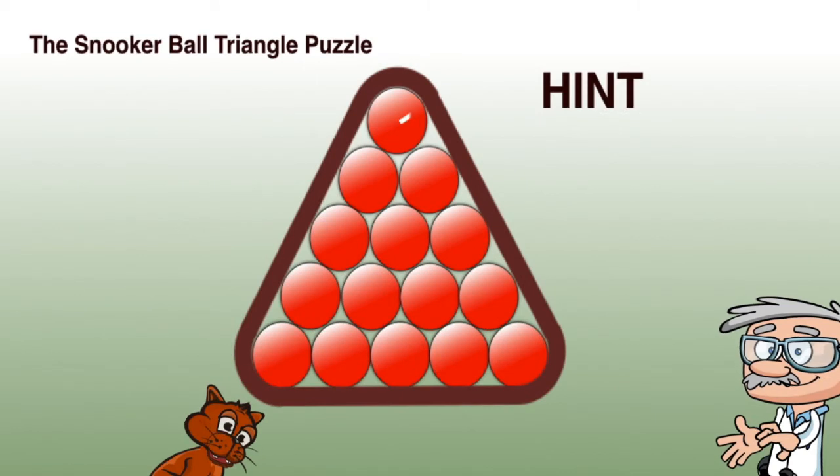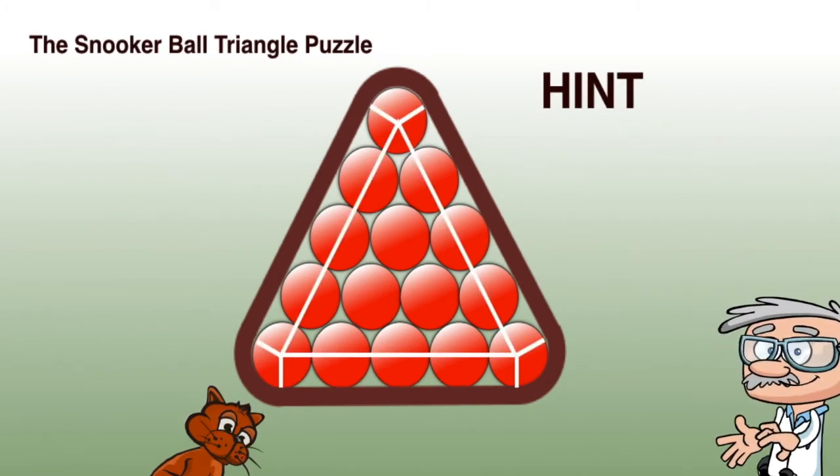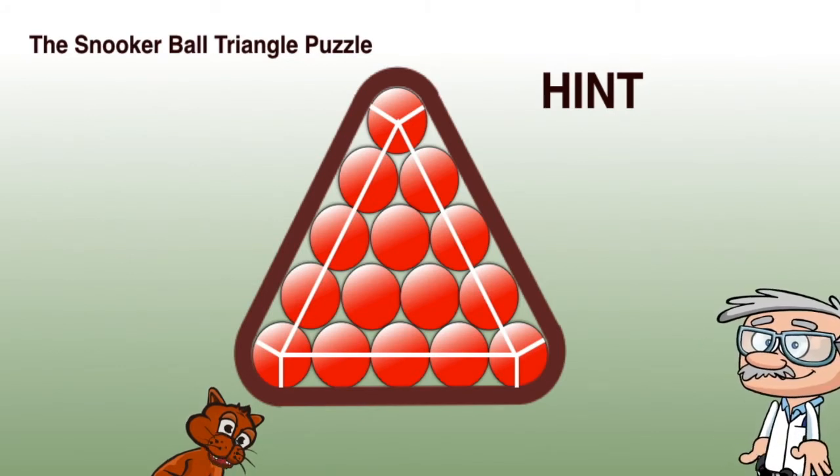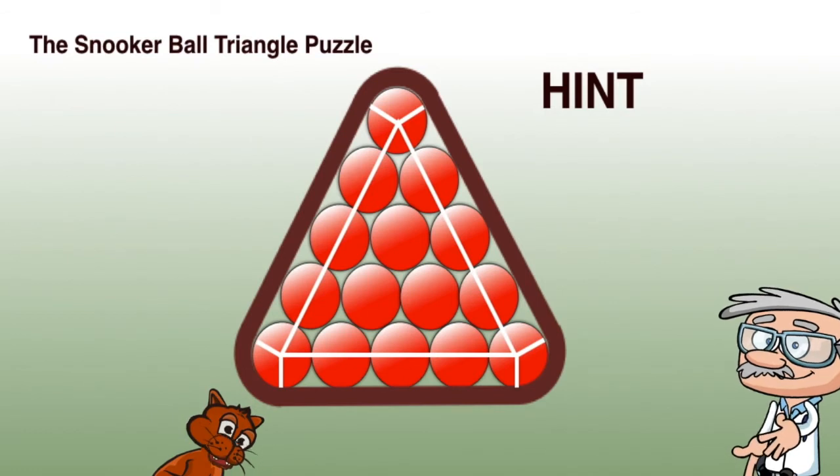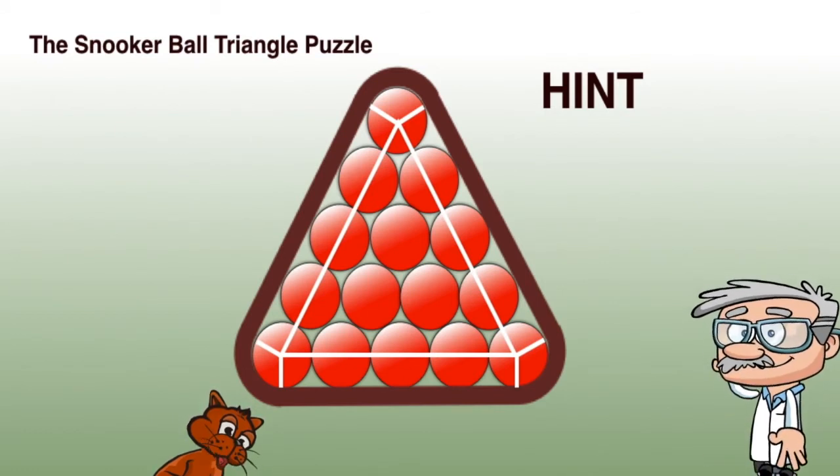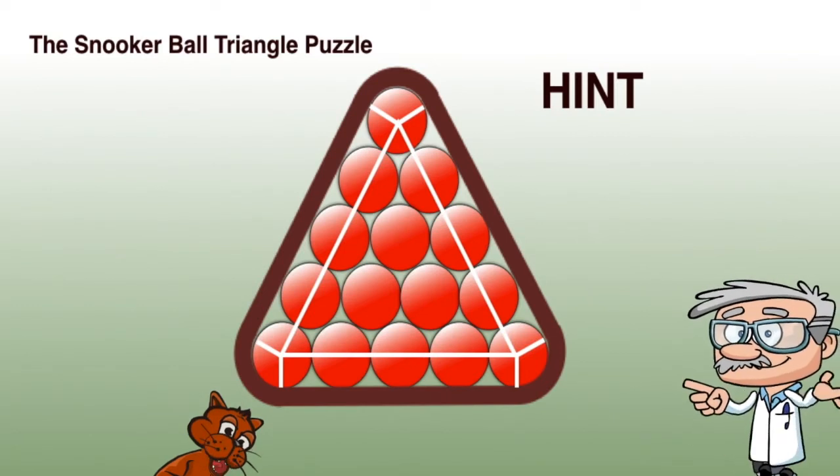So here is a hint from me, Maurice the Cat. They call me Maurice the Cat because I'm called Maurice, and I'm a cat. Split the problem into seven separate areas made up of three different types of shape. That's the end of the hint.